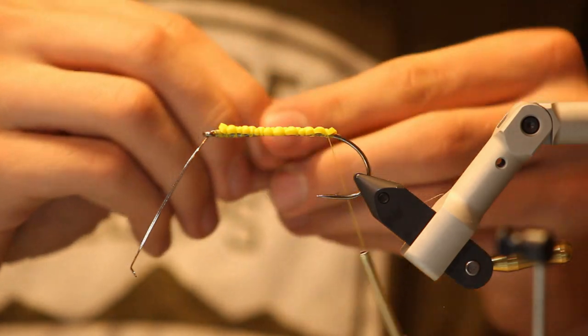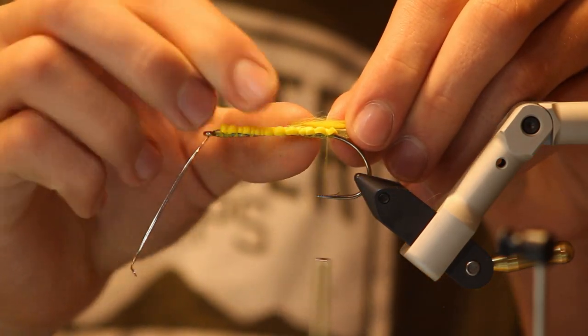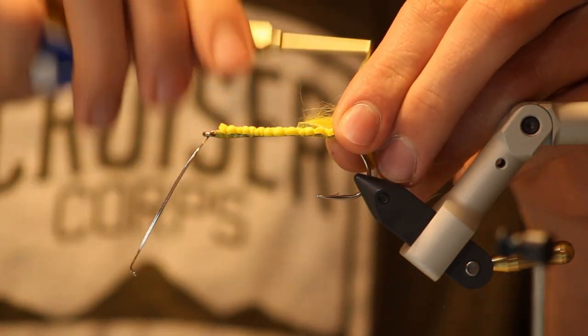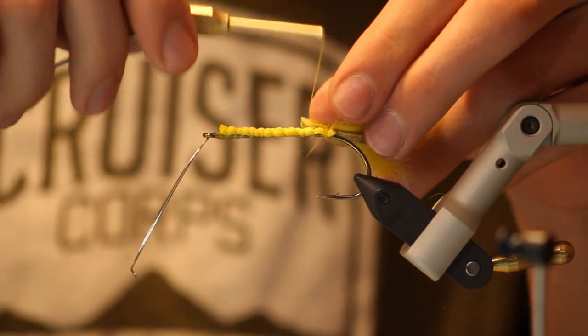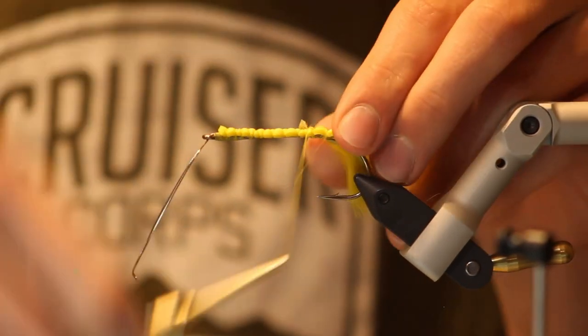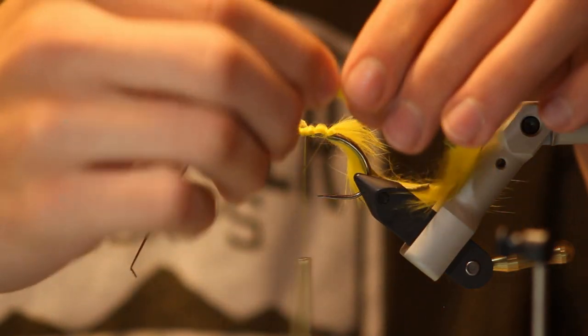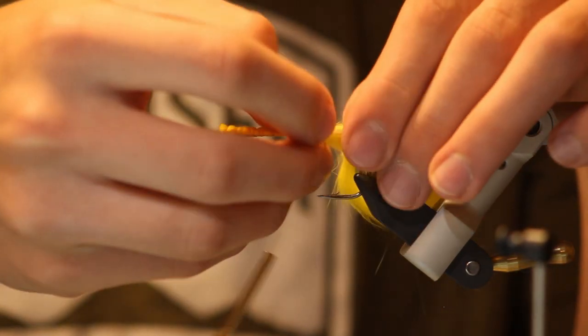And then we've got our yellow rabbit strips here. I'm just going to tie these on. And we've got the other one. I like to have the leather facing inward.